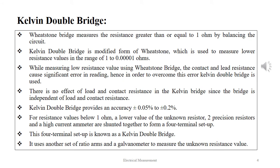The Wheatstone bridge measures resistance greater than or equal to 1 ohm by balancing the circuit. The Kelvin double bridge is a modified form of the Wheatstone bridge used to measure lower resistance values in the range of 1 to 10 micro ohm, or 0.0001 ohm. When measuring low resistance using the Wheatstone bridge, contact and lead resistances cause significant error, and the Kelvin double bridge is used to overcome this. It is independent of lead and contact resistance, providing accuracy of ±0.05% to ±0.02%.